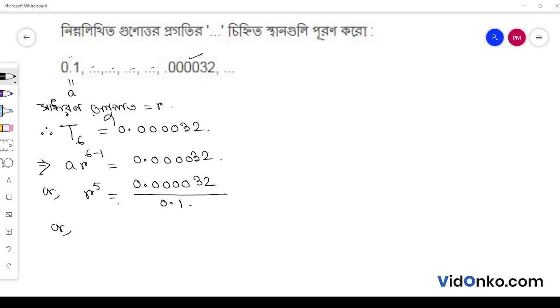r to the power 5 equals 0.000032 divided by 0.1. So r's value is 0.2.